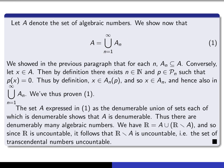So the set of algebraic numbers is denumerable. But the set of all real numbers is the union of A and its complement — the transcendental numbers. If both were denumerable, their union would be denumerable. But we know that ℝ is not denumerable; it's uncountable. Therefore the set of transcendental numbers must be uncountable. That completes the proof.